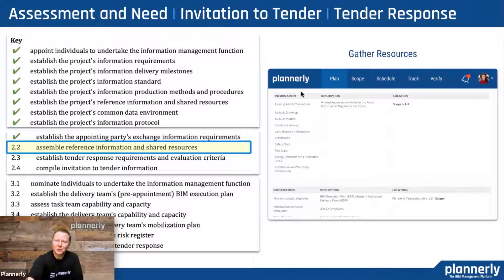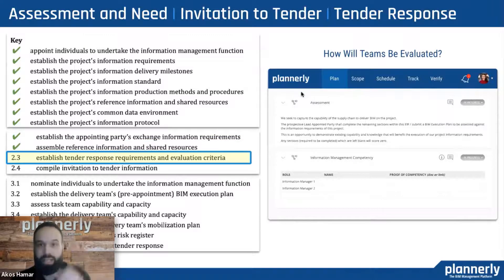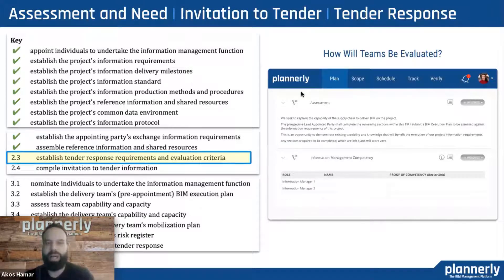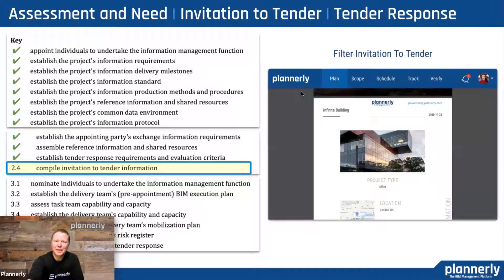Then gathering resources together — understanding examples we can share with people, content warehouses or template files that people can use. Talking about evaluation criteria: we have to establish the tender response requirements and evaluation criteria. We can expect a much better response and results if we share upfront how we are going to evaluate the answers on our exchange information requirements. When we have a set of requirements that are very broad, it's difficult for teams to understand exactly what it means to them. Being able to filter for just specific appointments is really critical so teams can understand what's going on for them.